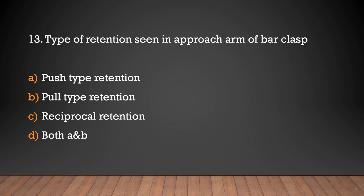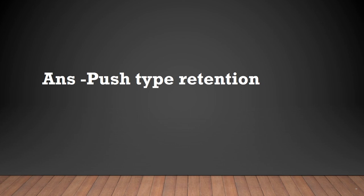What type of retention is seen in the approach arm of a bar clasp? Push type retention, pull type retention, reciprocal retention, or both A and B? The answer is push type retention — push type retention is seen in the approach arm of bar clasp.